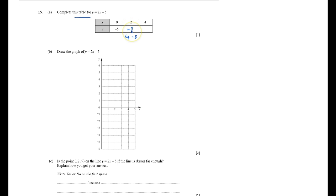So I've got 0 minus 5, I've got 2 minus 1, make sure I check it carefully, and 4. If x is 4, two 4's are 8, take away 5 is 3. So 4 is 3.